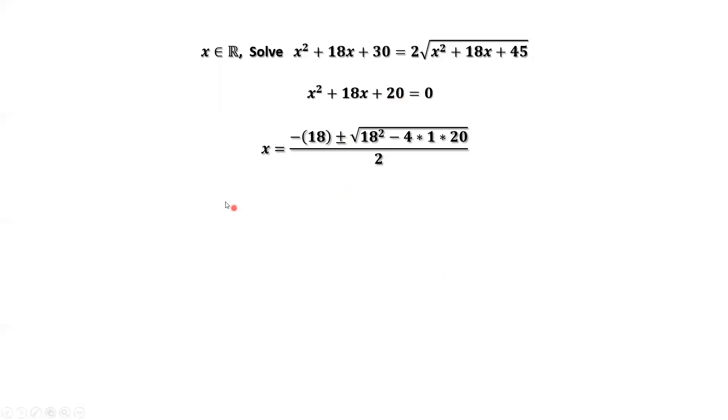We have x equals negative 18 plus minus square root of 18 squared minus 4 times 1 times 20 divided by 2.